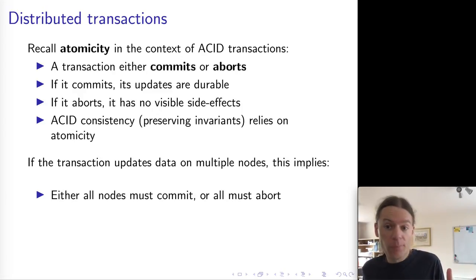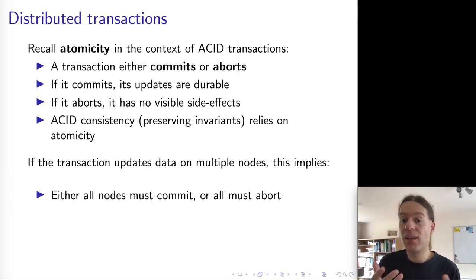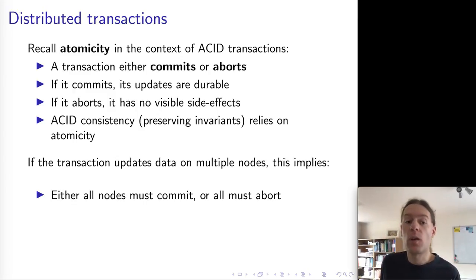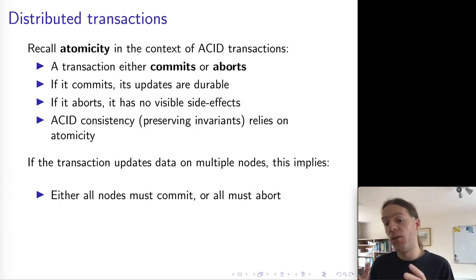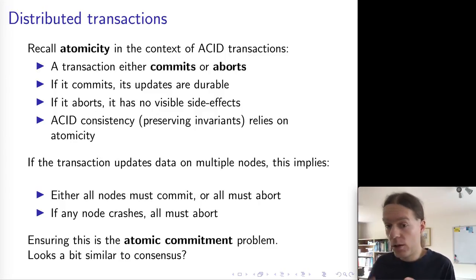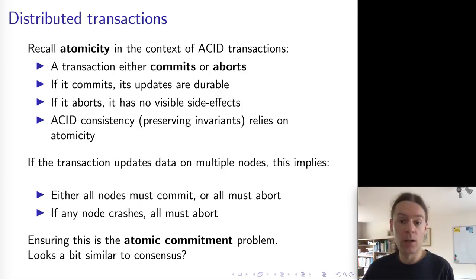In a distributed system we might have a transaction that involves more than one node in a distributed database, and in this type of system we have to ensure atomicity across all of the nodes participating in a transaction — all nodes on which data is being read or written. We must ensure that the transaction either commits on all of the nodes or aborts on all of the nodes. Moreover, if one of the nodes crashes, we must abort the transaction on all other nodes, because the crashed node cannot complete the transaction. This is known as the atomic commitment problem in distributed systems.